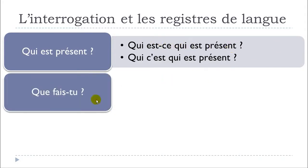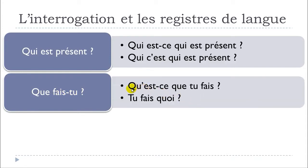Second question: 'Que fais-tu?' — 'What do you do?' In this formal form we put the verb first, then 'tu'. The everyday version is 'Qu'est-ce que tu fais?' — we add 'est-ce que'. And the last informal spoken form is 'Tu fais quoi?' — remember to raise your voice at the end to make clear it's a question.